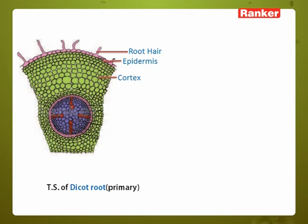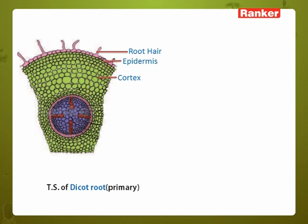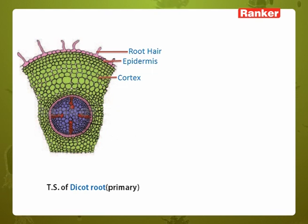Next one is cortex. A bridge between the epidermis and the vascular tissue system is cortex. The cortex cells are round, polygonal, or oval cells with a lot of intercellular spaces present in them. These occupy the majority of the tissue system and give mechanical strength to the plant body.